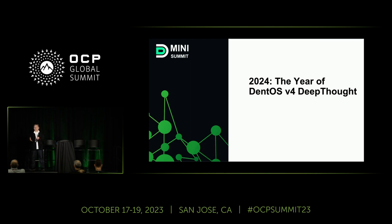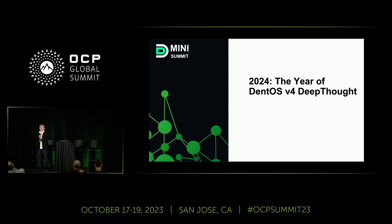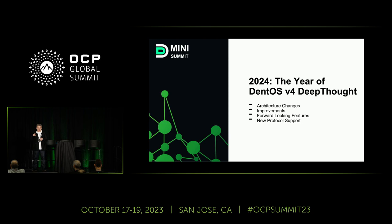We want to keep this momentum going into 2024. The next version — the D release — will be something like Deep Thought, something with D from Hitchhiker's Guide to the Galaxy. We are focusing on adding additional features, usability, and deployability. We are going to talk about architectural changes, some improvements we are planning, forward-looking features, and a few additional protocols we are going to support.